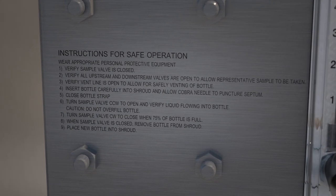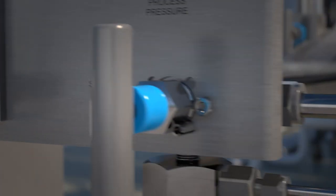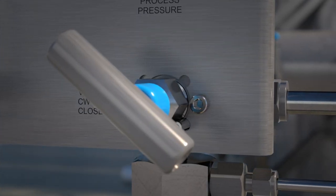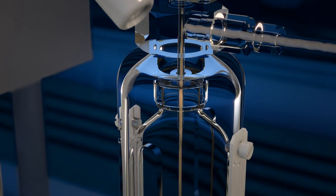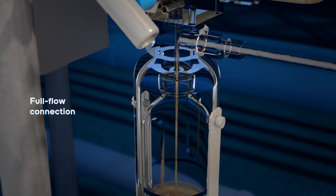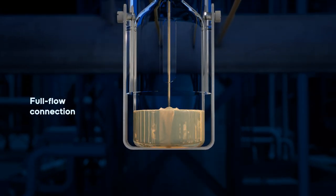The panel includes operating instructions to guide the operator through each step of the sampling process. When the operator opens the sample valve using the multi-turn handle, the process liquid flows through the sample needle assembly to the collection bottle. The valve body is available with one-half to one-inch connections that provide full flow and reduce pressure drops.